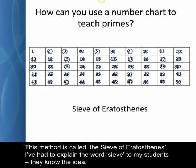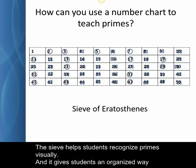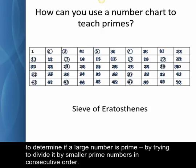This method is called the sieve of Eratosthenes. I've had to explain that word sieve to my students. They know the idea since they're all familiar with spaghetti strainers, but not the word sieve. The sieve helps students recognize primes visually, and it gives them an organized way to determine if a large number is prime, by trying to divide it by smaller prime numbers in consecutive order.